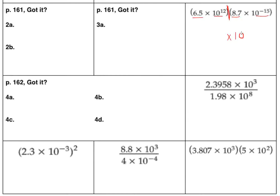And when we're multiplying powers with the same base, in this case 10, we can add the exponents. So 12 plus negative 15 is negative 3.